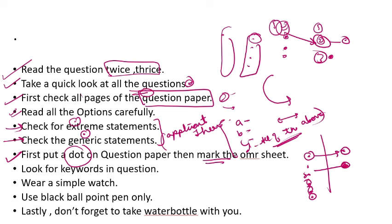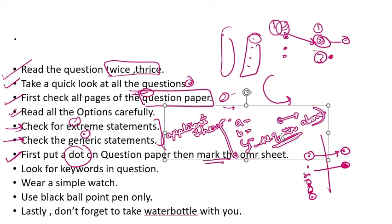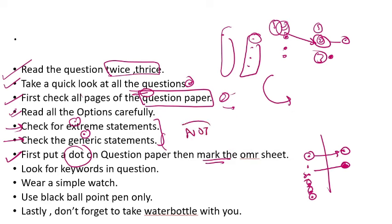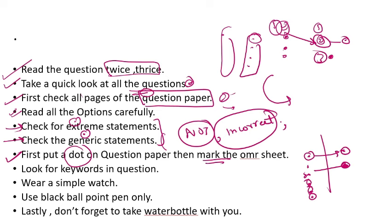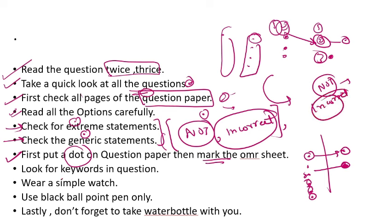Now let's see the OMR sheet. Look for keywords in the question — this is very important. Students have a problem here. Sometimes a question is written as 'which of the following is NOT an application?' or 'which of the following is incorrect?' These are negative sentences with keywords like 'not' or 'incorrect,' and our eyes often don't detect them. So we reverse the question and solve the wrong version. Although we know the concept, because we missed the keyword, we answer incorrectly. See the keywords — 'not' written in the question, 'which of the following is not a way to do this,' or 'incorrect.' This is the keyword rule.